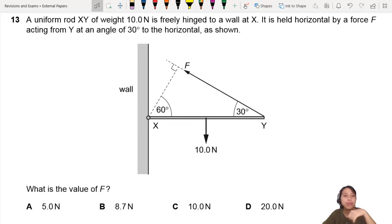Chapter 5 question. A uniform rod XY of weight 10N is freely hinged to a wall at X. Hinge means it's kind of like the pivot, pivoting about X. So they already told you the pivot point.